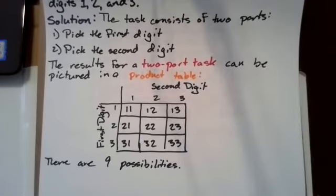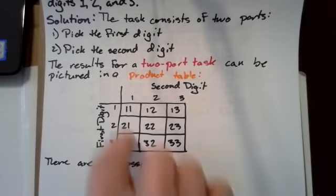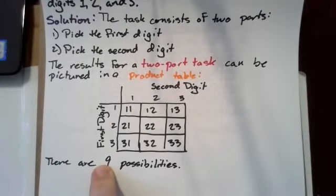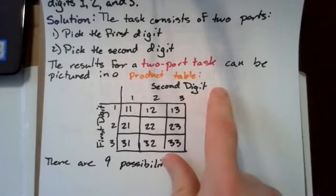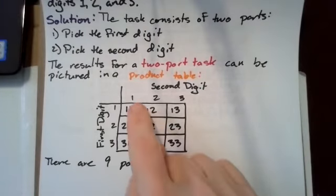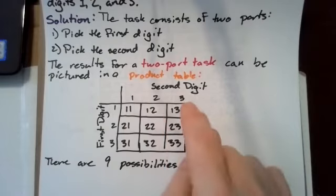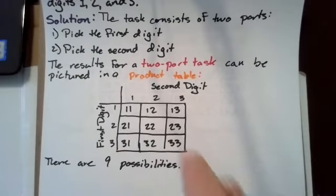Here is the product table for this task. Along the y-axis, we have the first digits 1, 2, and 3, and along the top we have the second digits 1, 2, and 3. So we can break this down as 1-1, 1-2, 1-3, 2-1, 2-2, 2-3, 3-1, 3-2, 3-3. There are nine possibilities.